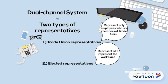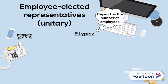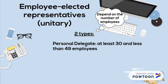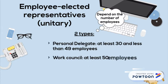There are two types of employee elective representatives, which both depend on the number of employees an establishment consists of. First is a personal delegate, which is from an establishment consisting of between 30 and 49 employees. Second are work councils, which are for an establishment consisting of at least 50 employees.